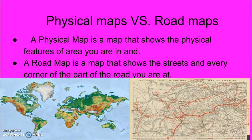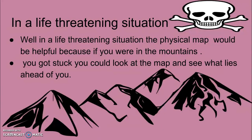Physical maps versus road maps. A physical map is a map that shows the physical features of an area which you are in. A road map is a map that shows streets in every corner of the road you are at. In a life-threatening situation, the physical map would be helpful because if you were in the mountains and you got stuck, you could look at the map and see what lies ahead of you.